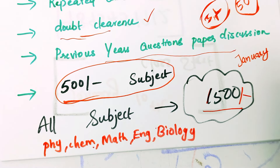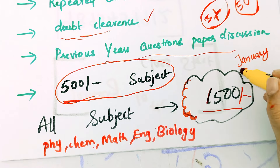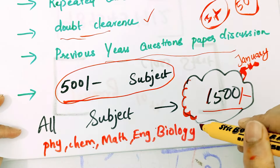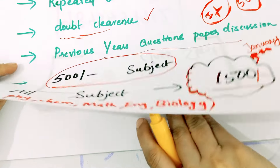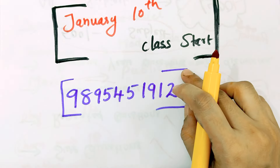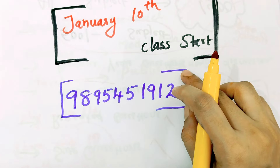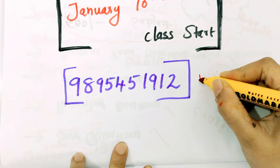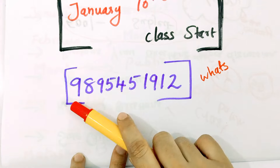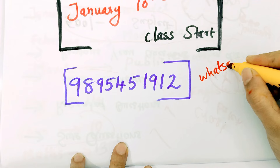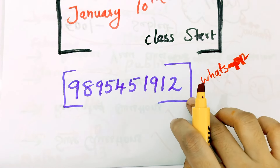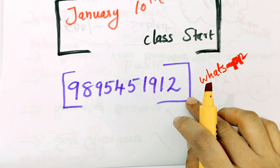Now, we have a commercial class. You can contact me with the contact number. Contact me by January 5th. If you have one subject, contact me by January 5th, and you will start the class by January 10th. You can call the phone number or send a WhatsApp message for the Plus 2 crash batch. The number is 9895451912. Send a WhatsApp message or email to us.